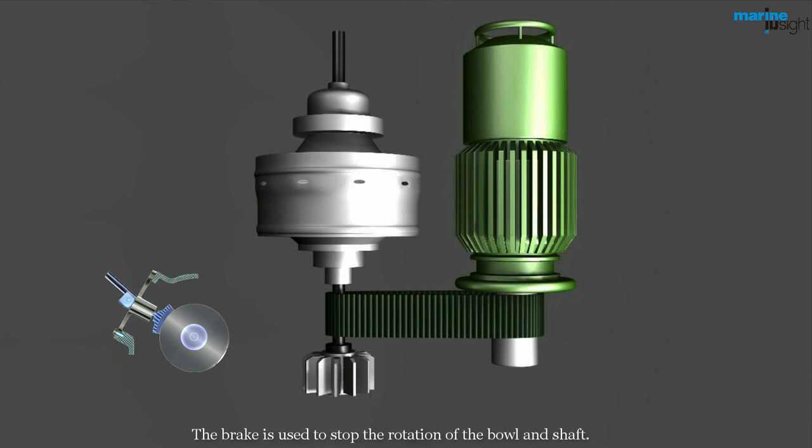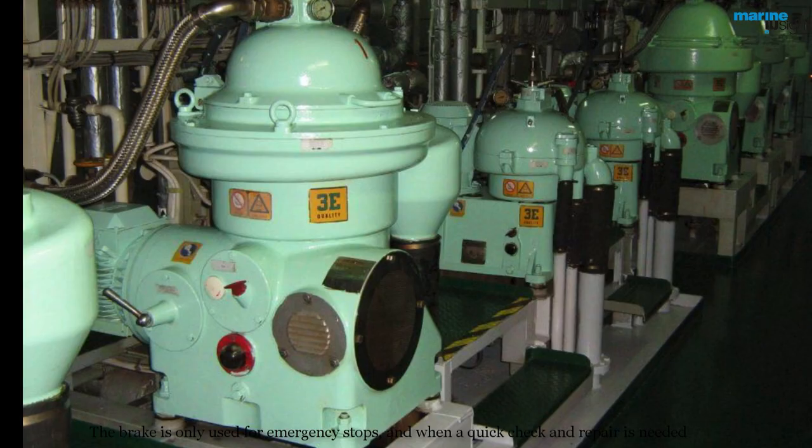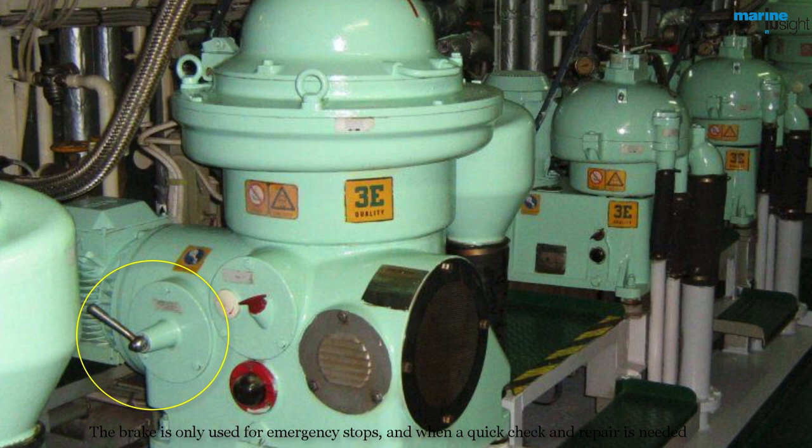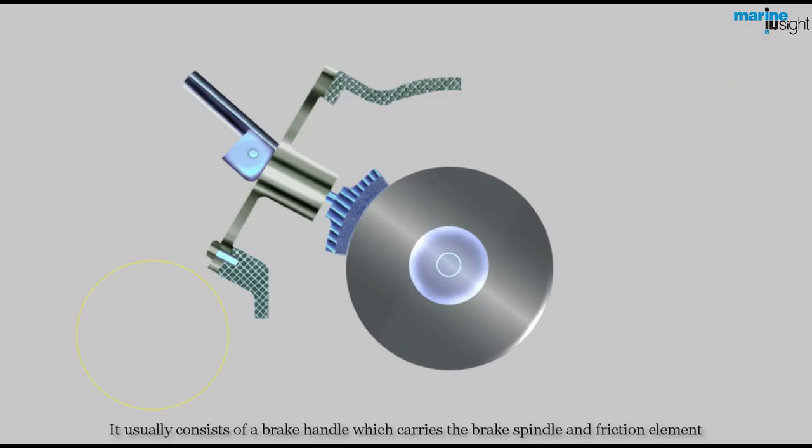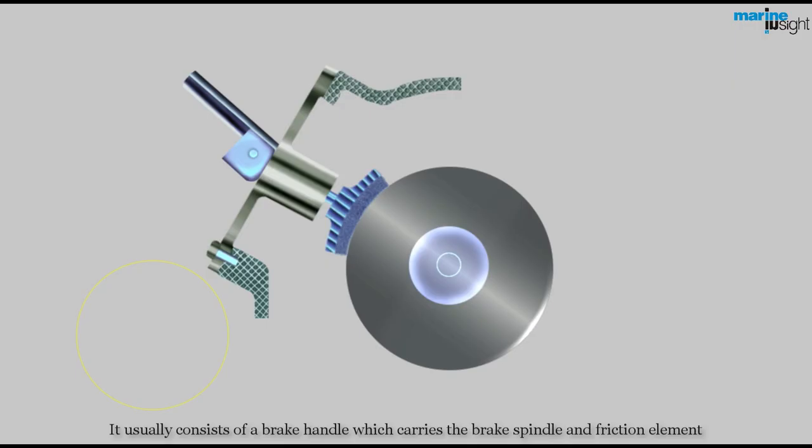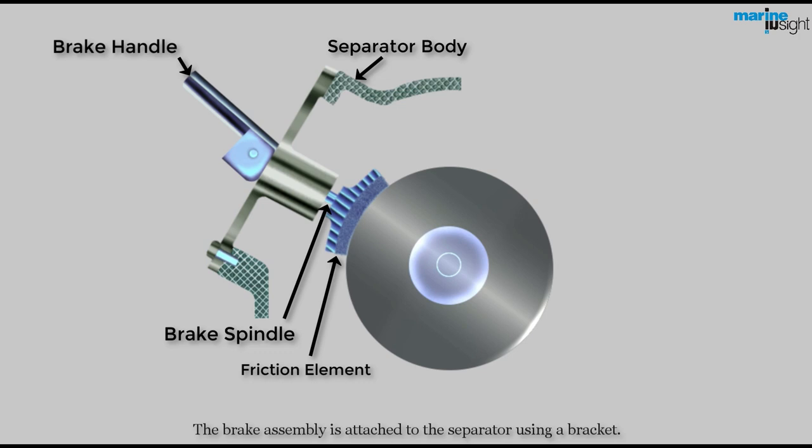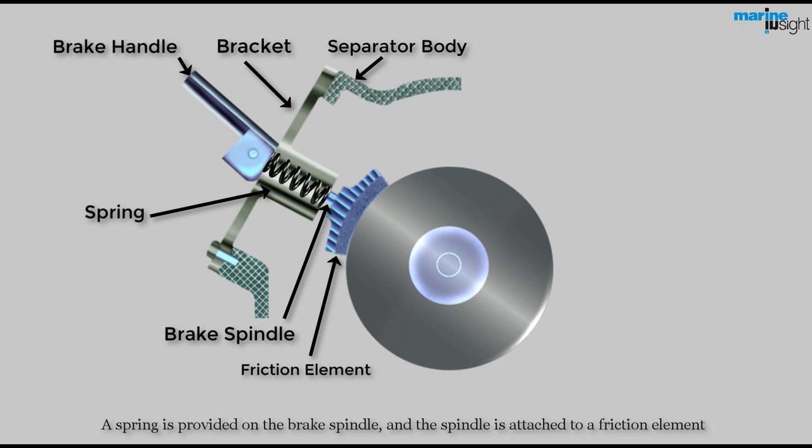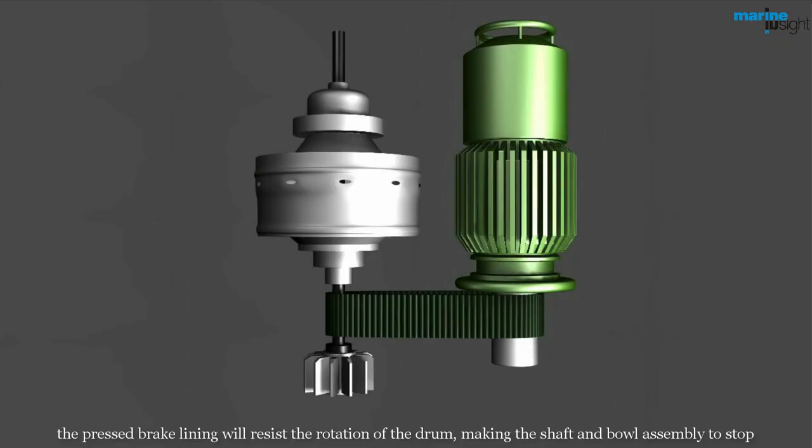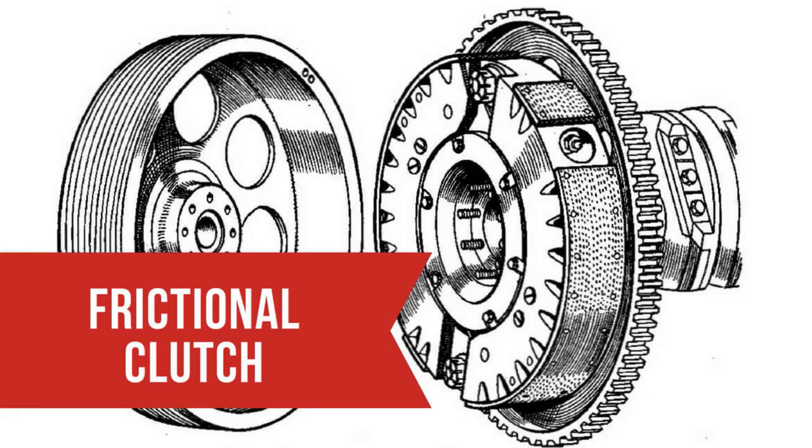The brake is used to stop the rotation of the bowl and shaft. The brake is only used for emergency stops and when a quick check or repair is done. It usually consists of a brake handle, which carries the brake spindle and friction element. The brake assembly is attached to the separator using a bracket. A spring is provided on the brake spindle and the spindle is attached to a friction element. When the lever is lifted, the spring which was kept compressed releases and the brake lining is pressed against the outer surface of the frictional drum. The pressed brake lining will resist the rotation of the drum, making the shaft and bowl assembly to stop.